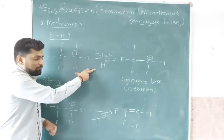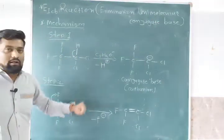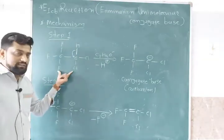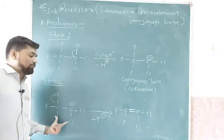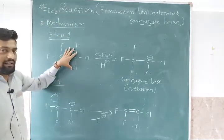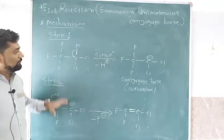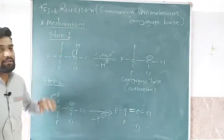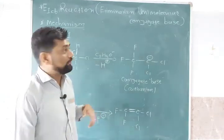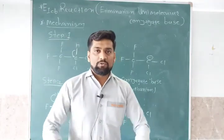In the first step, conjugate base is formed from alkyl halide. This is unimolecular — step one involves the substrate (alkyl halide) concentration and step two involves the conjugate base concentration. So the rate of E1CB depends on both substrate as well as conjugate base concentration. This is all about the E1CB reaction — Elimination Unimolecular Conjugate Base. Thank you friends.